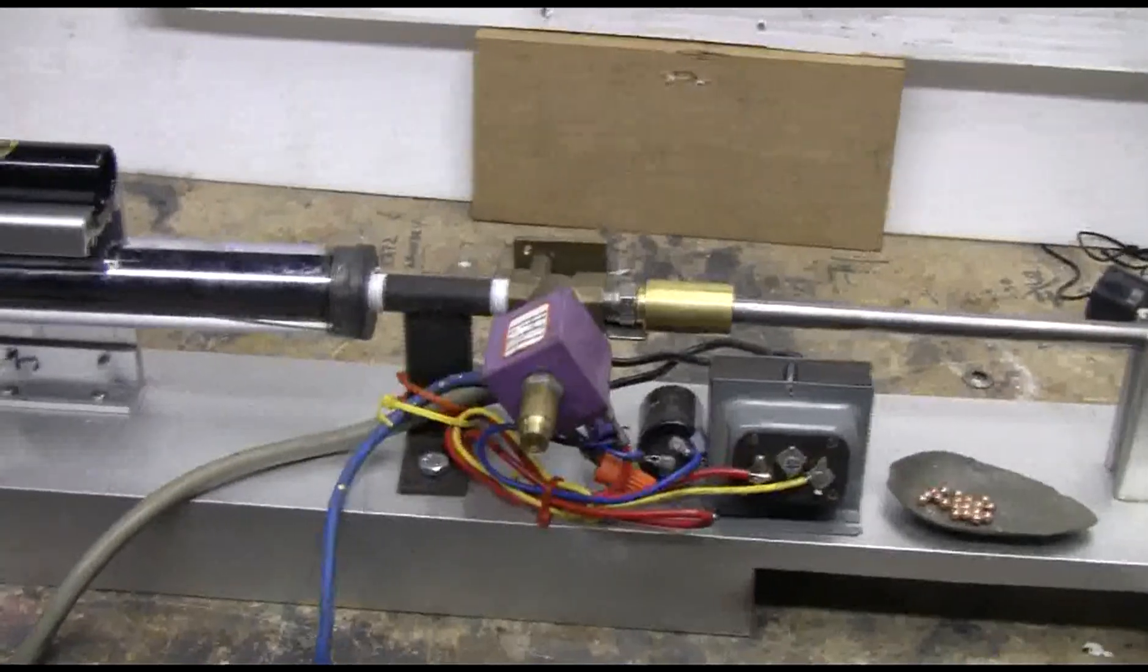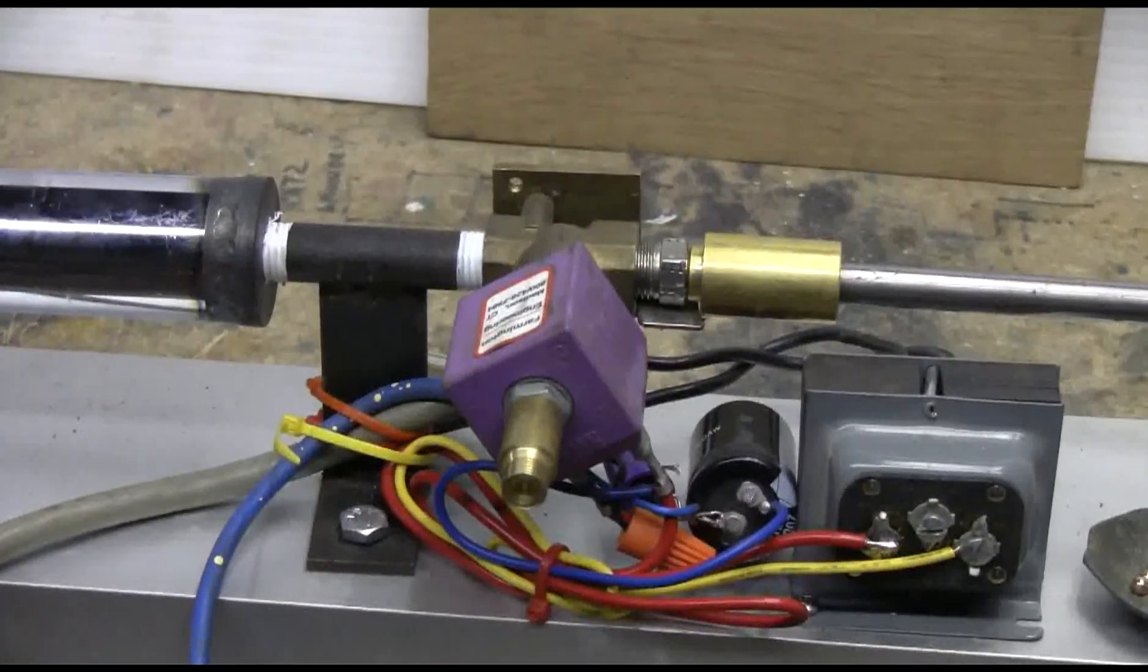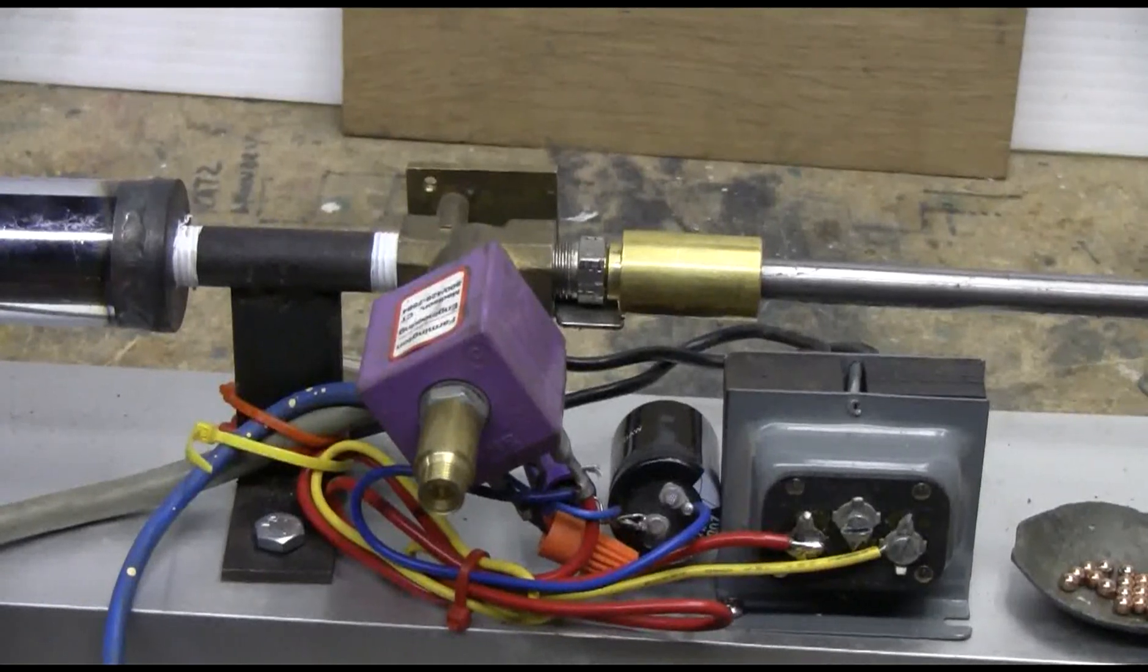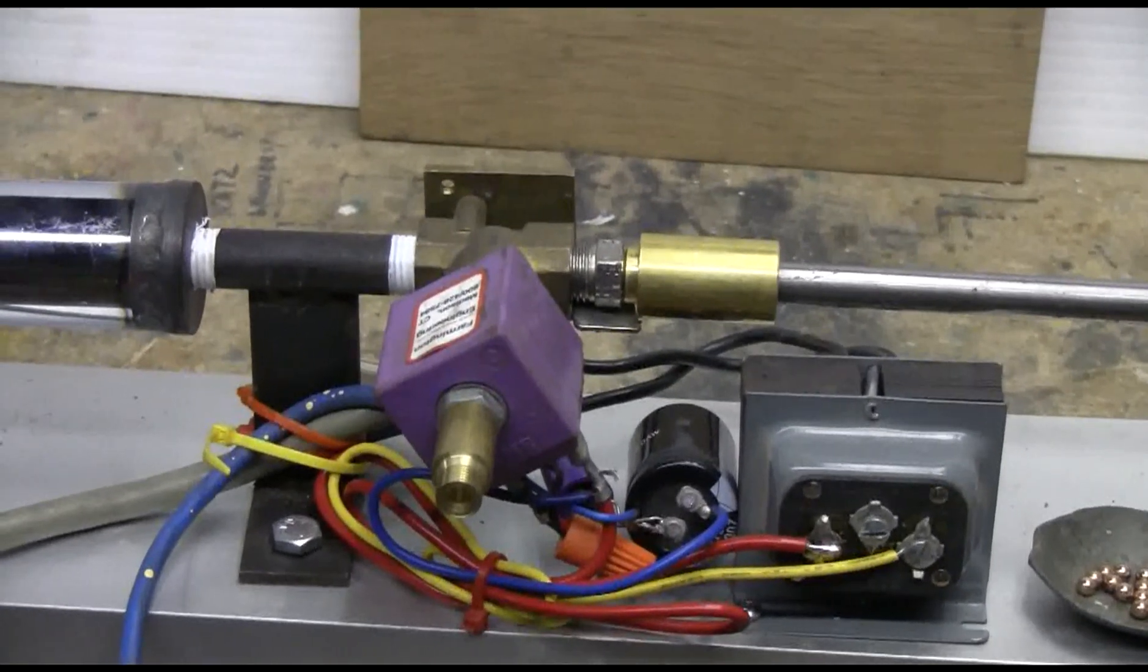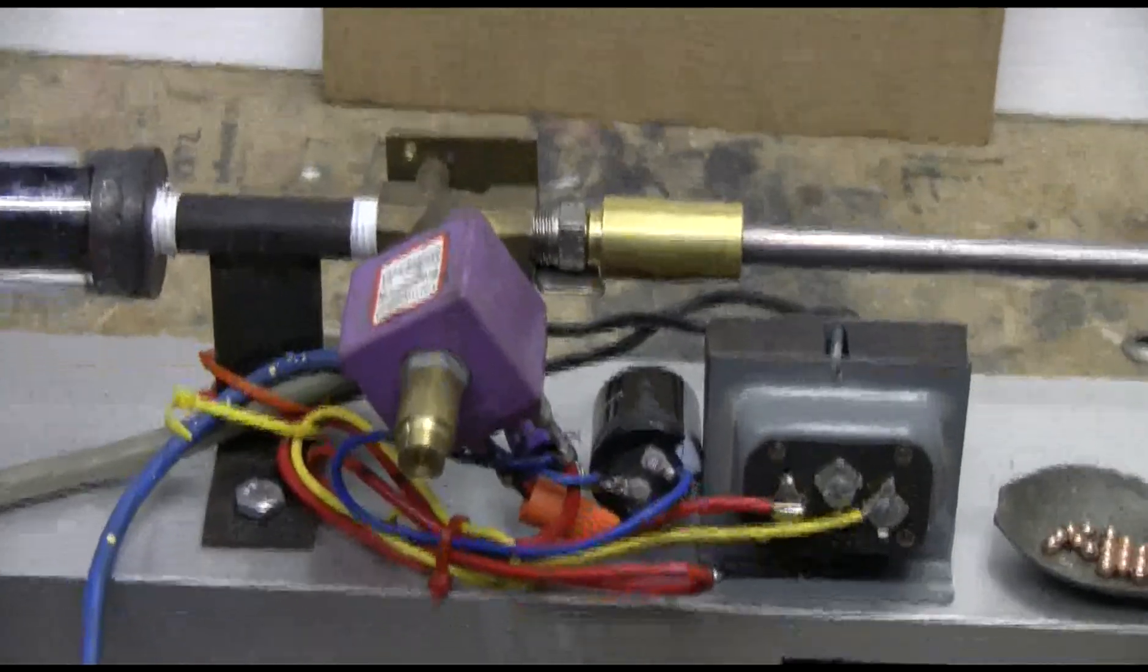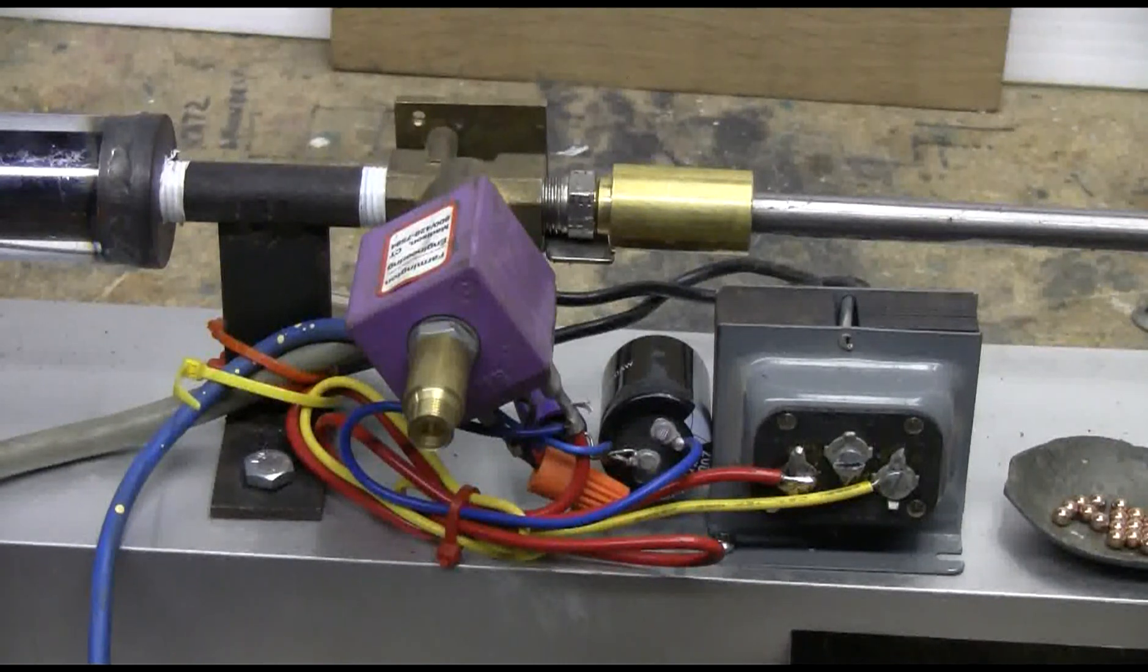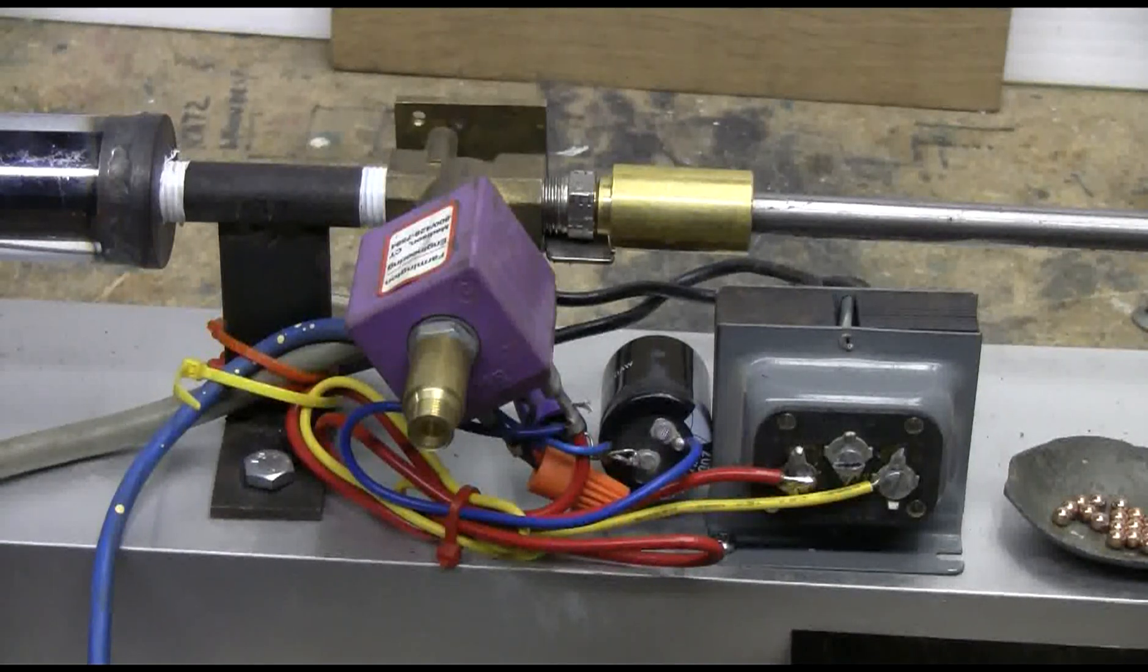The valve in the middle here is a small quarter inch solenoid valve. Electric triggering is provided by a transformer, rectifier and capacitor because unlike my other cannons this is a 24 volt valve and I discovered that at higher pressures like 400 PSI and up it prefers to open with the pulse of DC from a capacitor.